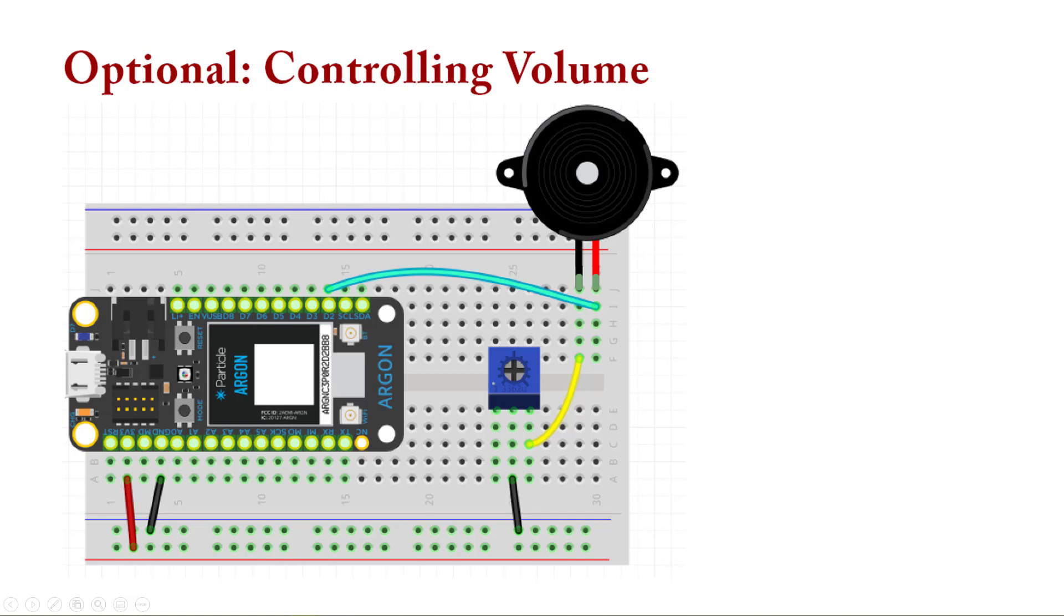We add in this potentiometer. You can see it's just slightly different. It's basically set up so that we have power, the power comes in, and it's going to go to the digital input. But then the ground is connected to one of the legs of the potentiometer.